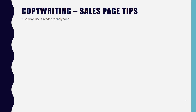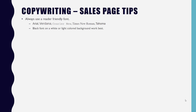Always use a reader-friendly font when writing your sales copy. Start writing in a Word document, then convert it into a page builder tool. Use basic fonts when publishing on your main website — tools like Optimize Press or Leadpages have good font choices. If you go with an HTML page, traditional fonts like Arial, Verdana, Courier New, Times New Roman, and Tahoma are easy to read. Black font on a white or light-colored background works best for drawing people in.